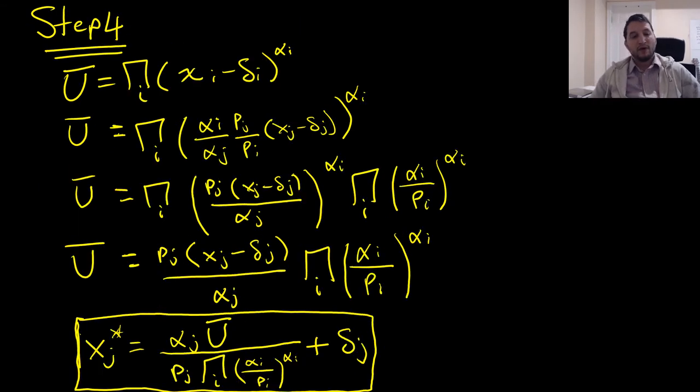Step number four is that we're going to take this intermediate bundle and plug it right into our utility constraint here, this being our Stone-Gary preferences. Plugging it in, we look at this delta i here because we added a delta i before and we're subtracting it away, so we just get the following result.